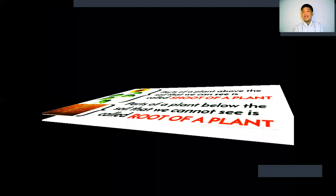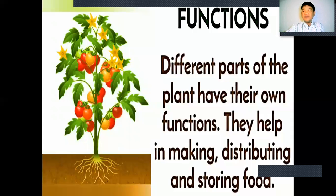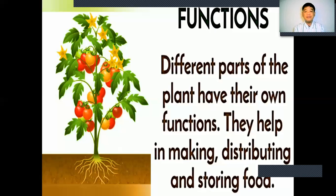Now let's learn the plant parts and their functions one by one. Each part of the plant has its own function. They help in making, distributing, and storing food. Last meeting you learned what the different parts of a plant are, and this time you will learn the different parts of the plant and their functions.